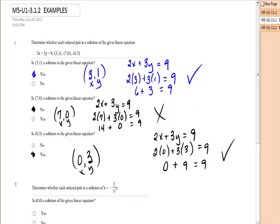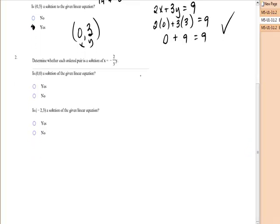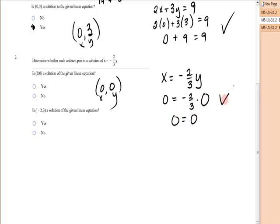Some of the ordered pairs you're going to be given will answer yes and some will answer no. Let's look at this next one. The equation is x equals negative 2 thirds times y. Is (0,0) a solution? Let's see. x is equal to negative 2 thirds y. (0,0): x is 0 and y is 0. Is 0 equal to negative 2 thirds times 0? Well, if I simplify on this right-hand side, negative 2 thirds times 0 is 0. 0 is equal to 0? That's true. So the answer is yes.